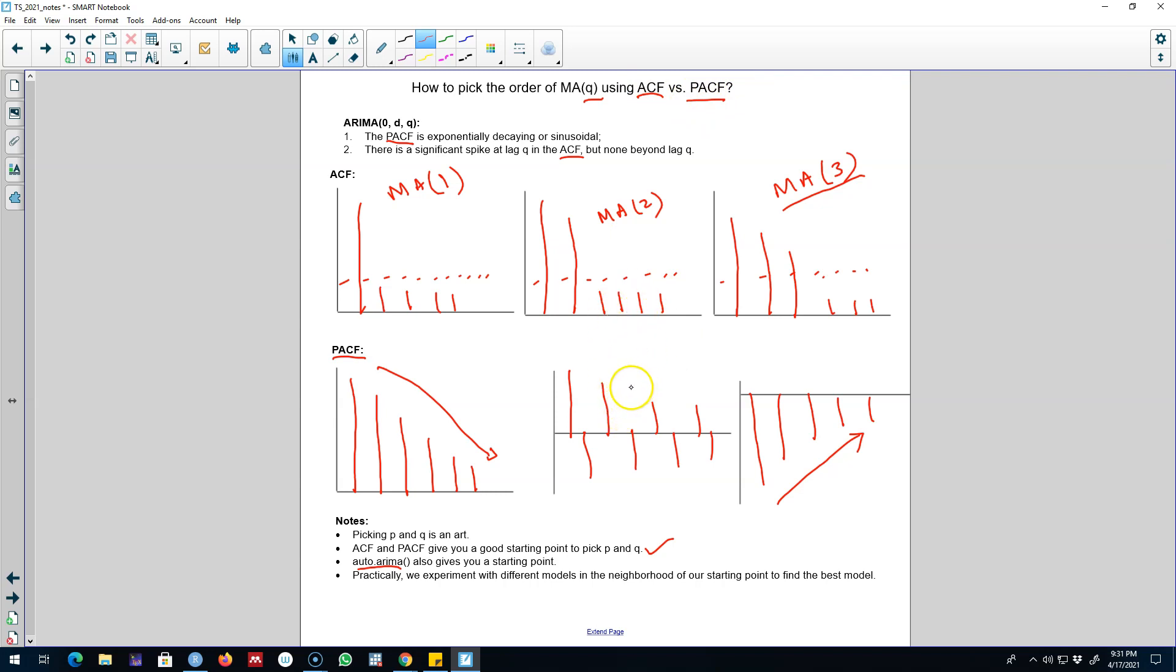This is pretty much what we do in forecasting. We always experiment with several models and then we choose the best model, whichever gives us the best result or whichever gives us the minimum forecasting error.